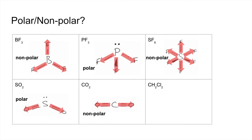And finally, CH2Cl2, dichloromethane. The C-H bond is technically classed as non-polar, but there's a very small dipole in that bond, and a much bigger dipole in the C-Cl bond. Those C-Cl dipoles have nothing to cancel them out, so the overall molecule has a dipole and is therefore polar.